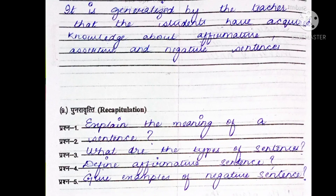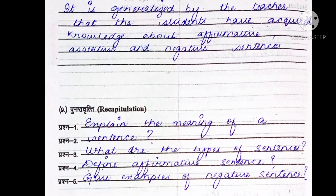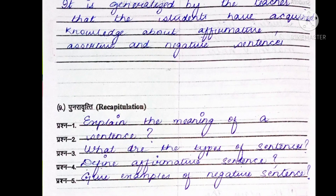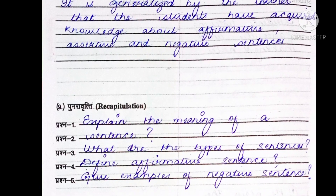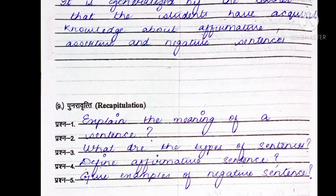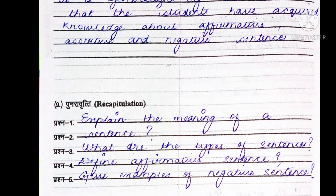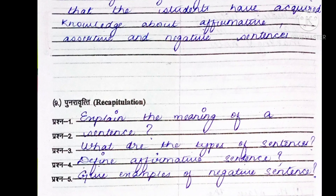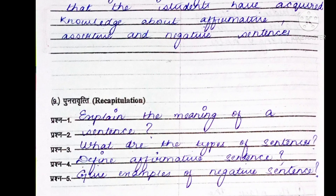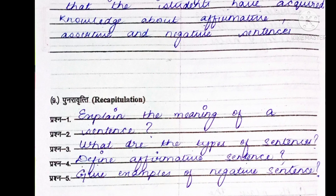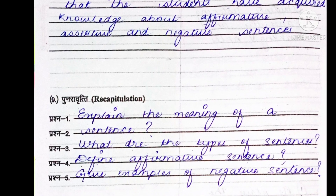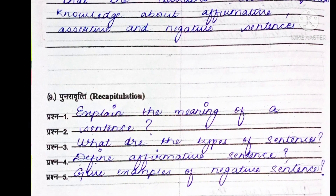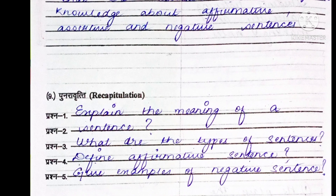In the recapitulation section, the teacher will ask the children four questions: explain the meaning of a sentence, what are the types of sentences, define affirmative sentences, and give some examples of negative sentences.